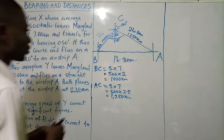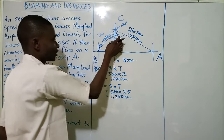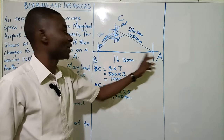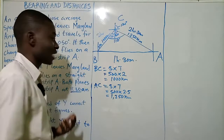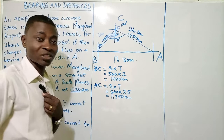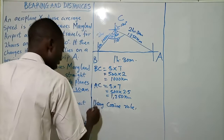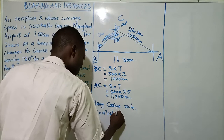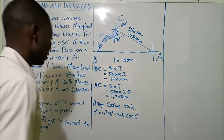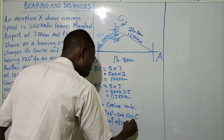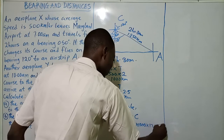Now we can use the cosine rule to find the distance AB. We know angle C is 110 degrees, side BC (which is side a) is 1000 km, and side CA (which is side b) is 1250 km. Applying the cosine rule: c² equals a² plus b² minus 2ab cos C, so c² equals 1000² plus 1250² minus 2 times 1000 times 1250 times cos 110 degrees.